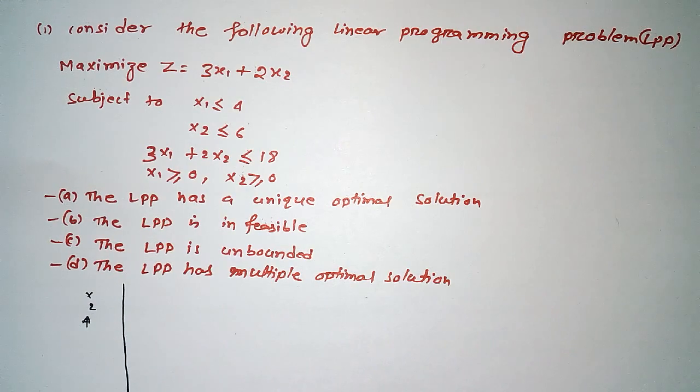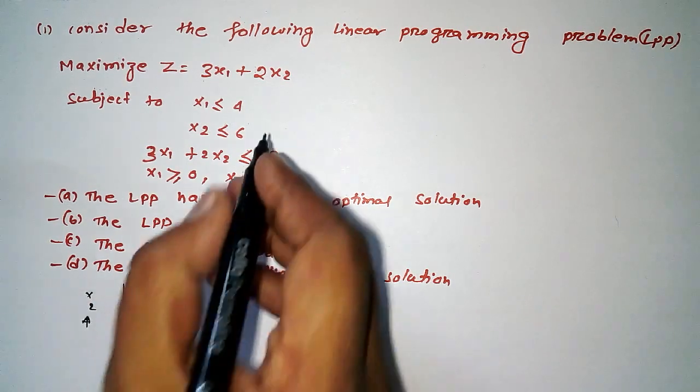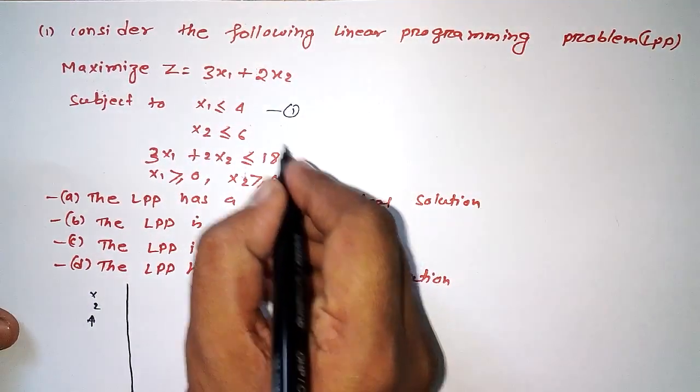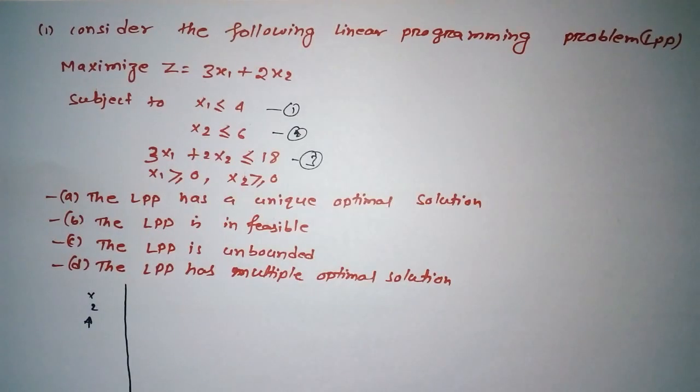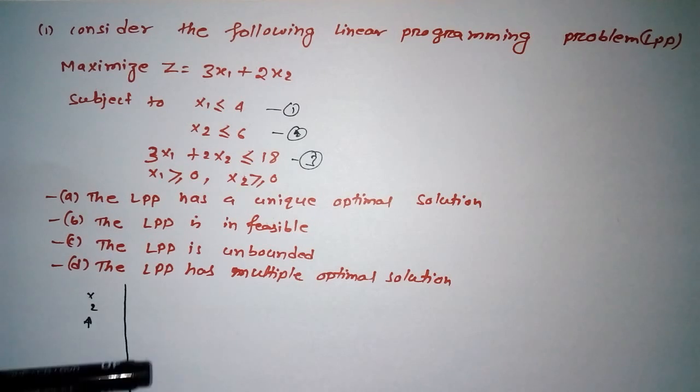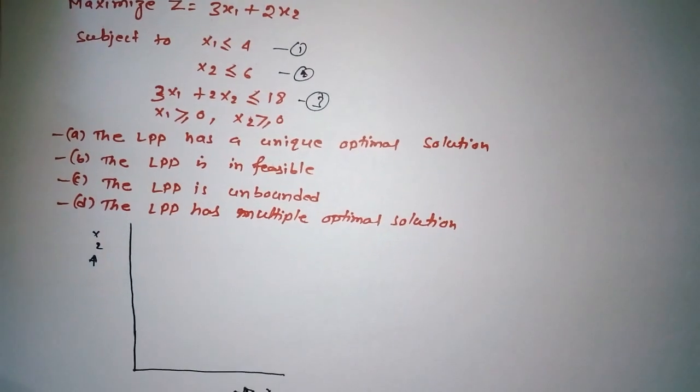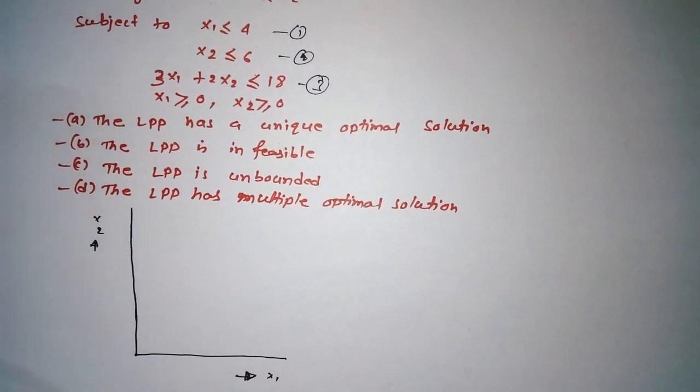Before solving this question, we need to know about the equations. Here we have three equations. In equation 1, we have X1 less than 4. If we want to draw the line for such an equation on this graph, we need to have points that we can specify from the origin.